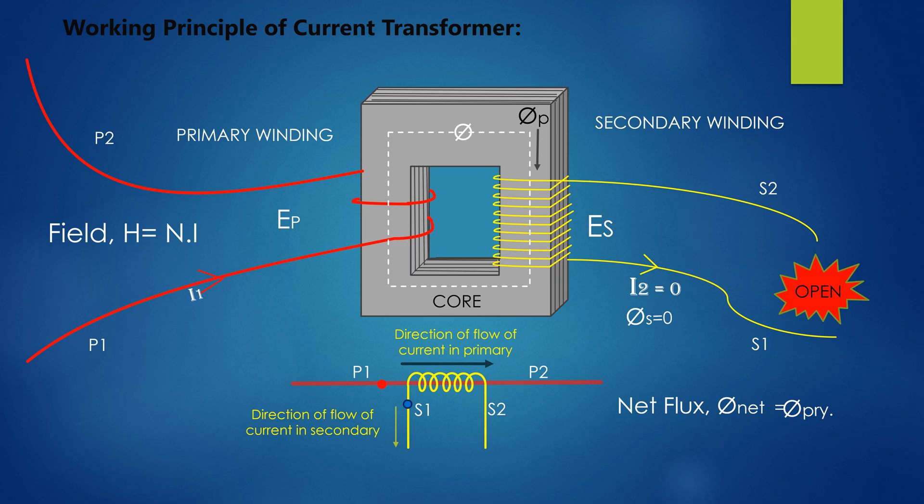Hence, huge flux linked with primary winding due to flow of high primary current, in absence of secondary current, is the net flux which is totally engaged to induce voltage at the windings by electromagnetic induction. Due to absence of flux in secondary, net flux, that is primary flux, increases to a high value. As the working net flux increases, secondary voltage increases to a high value and core gets saturated.